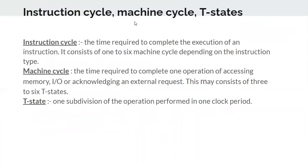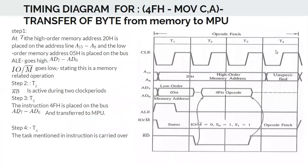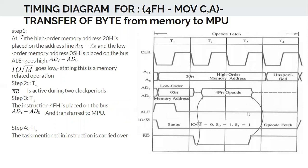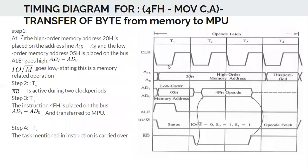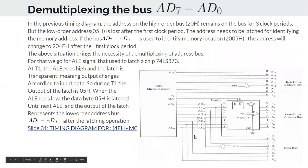The instruction cycle is the time required to complete the execution of one full instruction; it consists of one to six machine cycles depending on the instruction type. A machine cycle is the time required to complete one memory or I/O access operation, consisting of three to six T-states, with a minimum of three. A T-state is one subdivision of operation performed in one clock period. An opcode fetch requires four T-states, which constitutes one machine cycle.